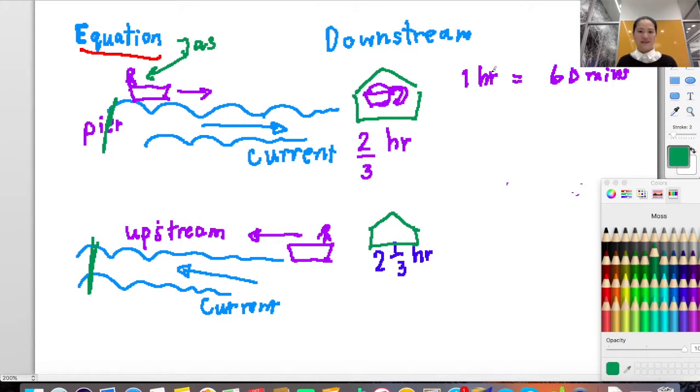In the equation, she spent two over three hours. You have to turn from hours to minutes. And if she goes back, this is upstream. I'm sorry, the current already goes this way. This is the current in Colorado River. If she goes upstream, she has to spend time longer. That means she spent two and one third hours. That's what the question gives you.